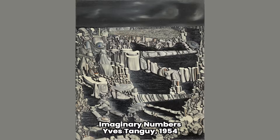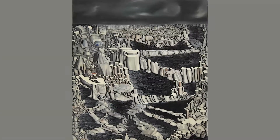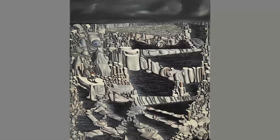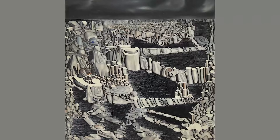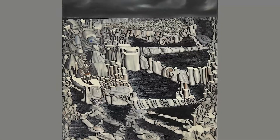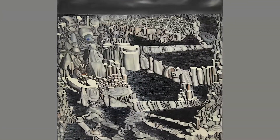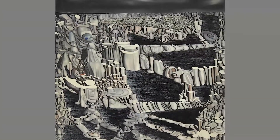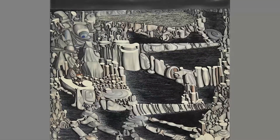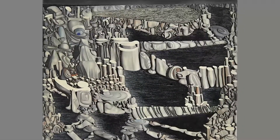Imaginary Numbers — artwork by Yves Tanguy from the year 1954. The work belonged to the dealer Pierre Matisse, son of Henri Matisse himself, who in 1931 opened a gallery in New York, and from 1958 it was in the hands of the great historian of the modern movement and curator of the Museum of Modern Art, William Rubin, until it entered the Thyssen-Bornemisza collection in 1973.